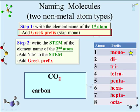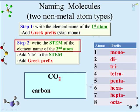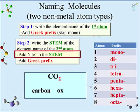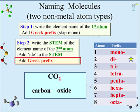Step 2: we need to get the element stem of the second element, oxygen. The stem for oxygen is just 'ox.' From here, we add '-ide' to 'ox,' forming 'oxide.' Then we add the Greek prefix associated with the subscript 2. A look at the table shows that to be 'di.' Add 'di' in front of 'oxide' and we have CO₂ being called carbon dioxide.